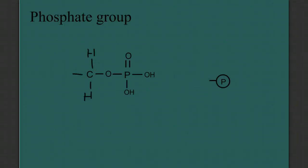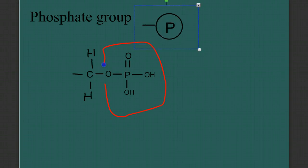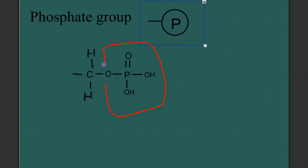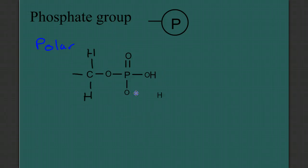Our next functional group is the phosphate group. When we draw the phosphate group, it's pretty complex — this entire structure added onto the end of a hydrocarbon. But luckily, we very seldom have to draw that structure, and we'll often just abbreviate with a P with a circle around it. The property that this functional group brings to a molecule is, like the hydroxyl group, polarity — so adding a phosphate group will confer a polarity to that molecule. Oftentimes you'll see the phosphate group written with these hydrogens pulled off, having been donated in an acidic way, leaving behind a negative charge, which makes it even more polar.